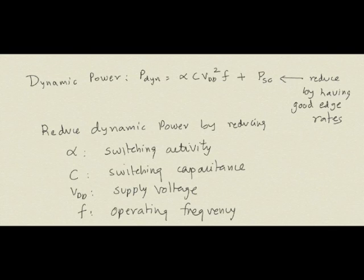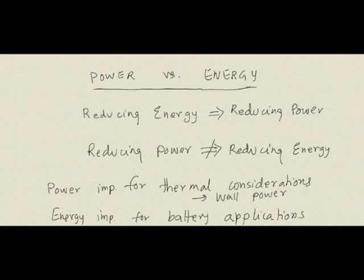One important distinction: power and energy are not the same. Power is the rate of consumption of energy. If you reduce energy (e.g., reduce CV²), you also reduce power. But reducing power does not necessarily reduce energy. For example, reducing frequency F reduces power (CV²F), but the energy per operation, CV², remains the same. Slowing down does not reduce energy to a first order.